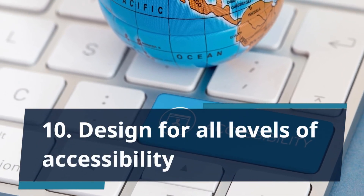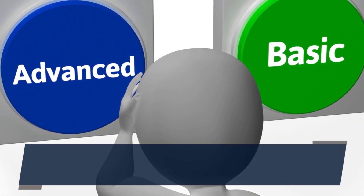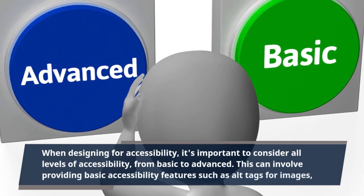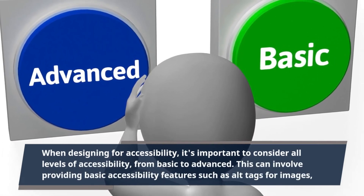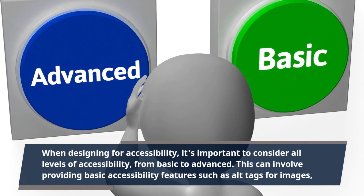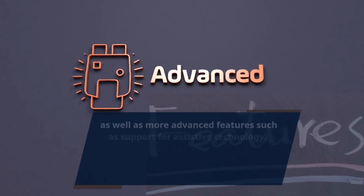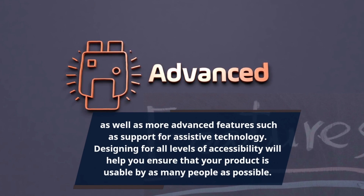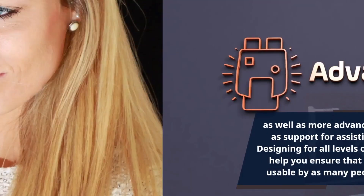Tip 10: Design for All Levels of Accessibility. When designing for accessibility, it's important to consider all levels of accessibility, from basic to advanced. This can involve providing basic accessibility features such as alt tags for images, as well as more advanced features such as support for assistive technology. Designing for all levels of accessibility will help you ensure that your product is usable by as many people as possible.